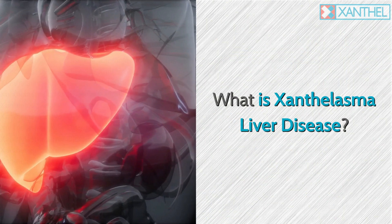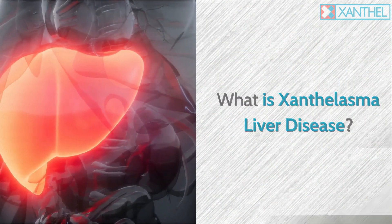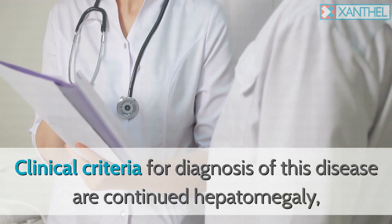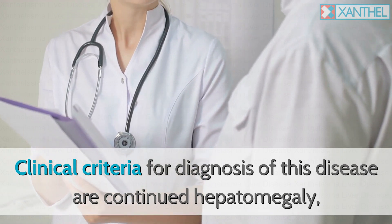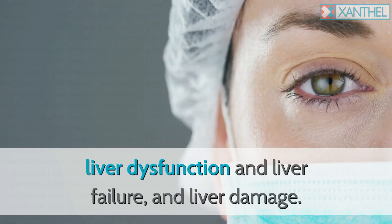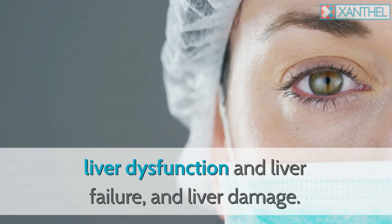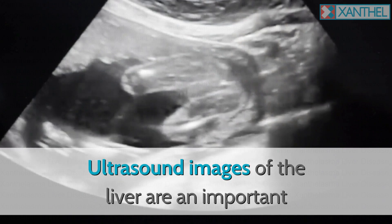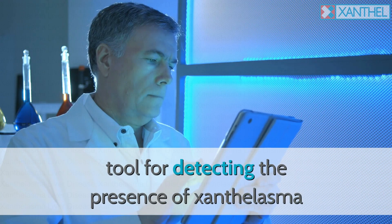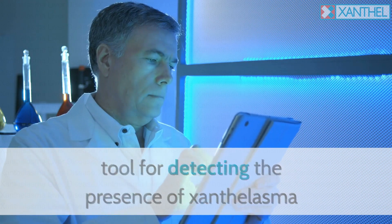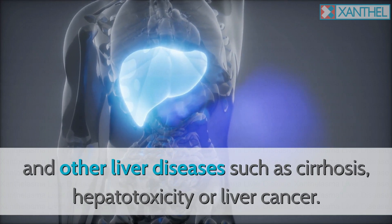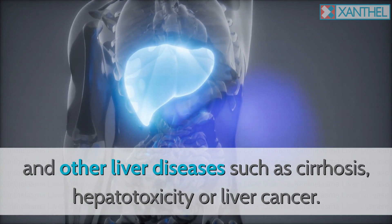What is xanthelasma liver disease? Clinical criteria for diagnosis include continued hepatomegaly, liver dysfunction, liver failure, and liver damage. Ultrasound images of the liver are an important tool for detecting the presence of xanthelasma and other liver diseases such as cirrhosis, hepatotoxicity, or liver cancer.